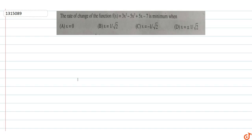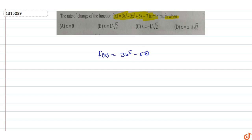In this question, the rate of change of the function f(x) = 3x⁵ - 5x³ + 5x - 7 is minimum. So f(x) = 3x⁵ - 5x³ + 5x - 7 is given, and we need to find out when the rate of change of this function is minimum.